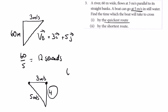This is the equivalent of the boat traveling at 4 meters per second directly across. So 60 divided by 4 is going to be 15 seconds to go by the shortest route.